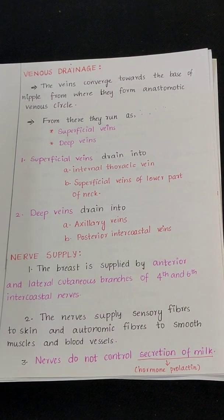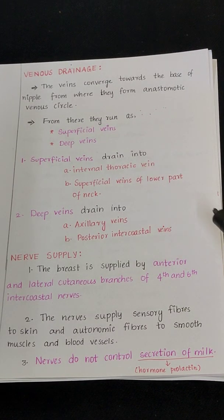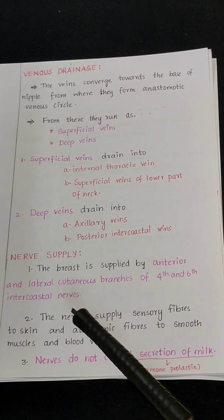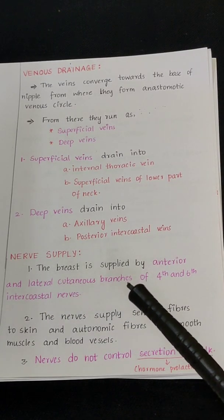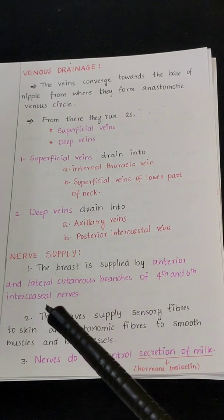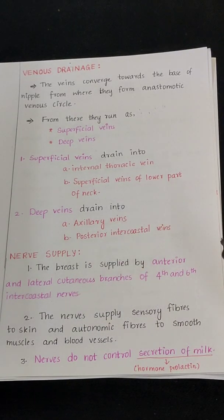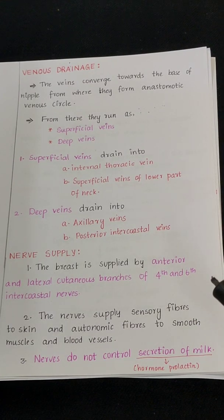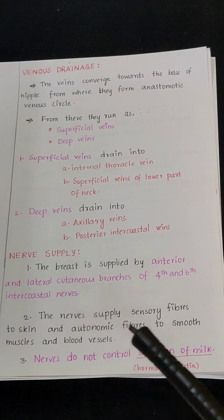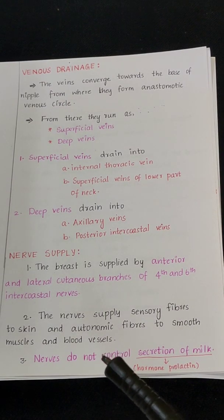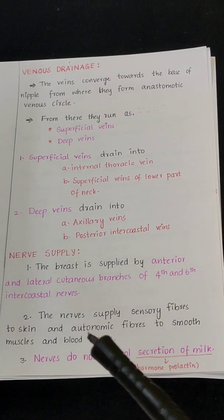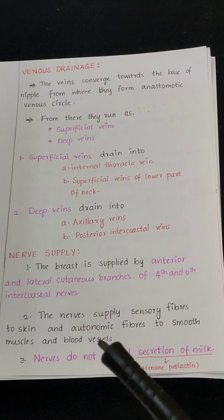The next one is the nerve supply of the breast. The breast is supplied by anterior and lateral cutaneous branches of the fourth to sixth intercostal nerves. These nerves supply sensory fibers to the skin and autonomic fibers to smooth muscles and blood vessels.